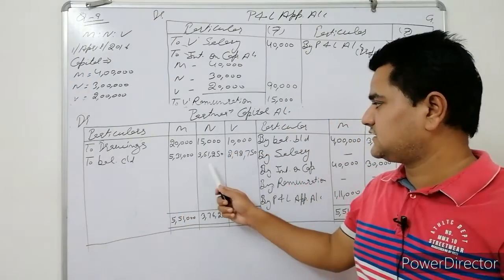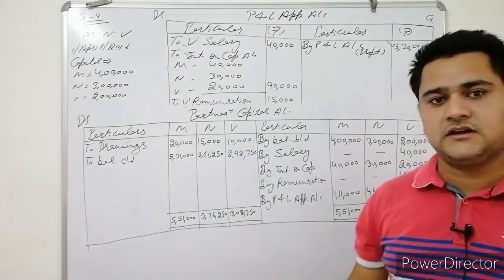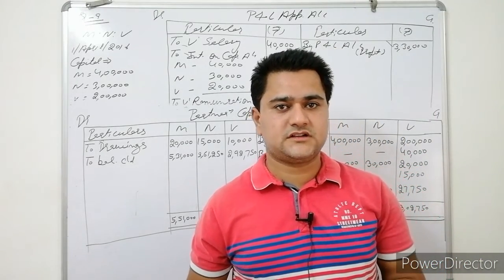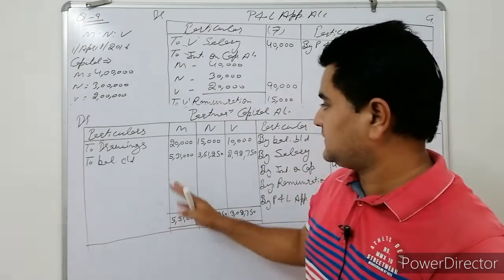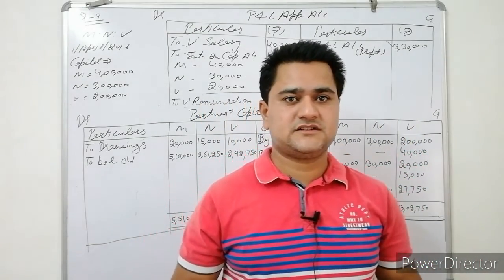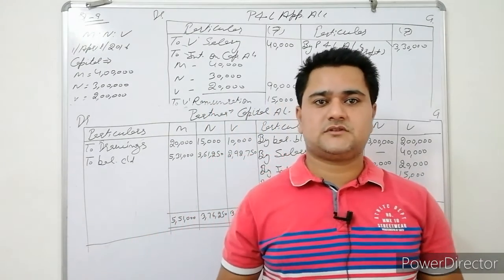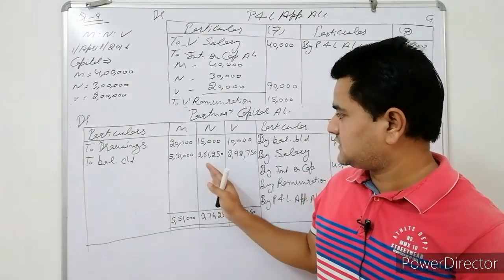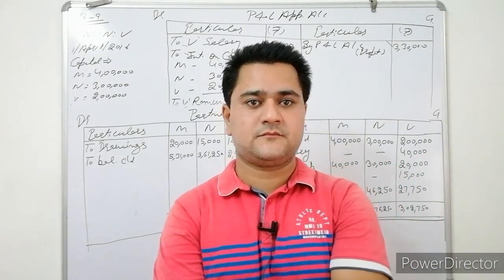So students, question number 9 is an important question. The closing balances are: Manish Rs.5,30,000; Navan Rs.3,27,250; Weibo Rs.2,92,750. The answer involves some modifications, so make sure to work through it carefully.